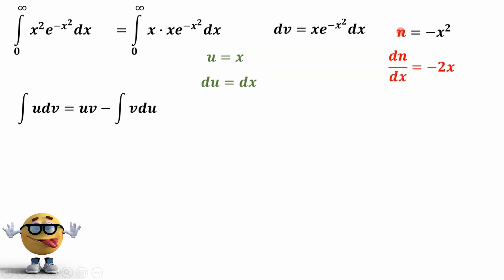So now we're going to rearrange this to solve for x dx. And that's the whole reason why we split this up, so that we can have an x here. And if we rearrange this equation, x times dx equals dn over negative 2. So x times dx is going to be dn over negative 2. We're just rearranging this equation, and negative x squared is equal to n, so we're substituting into here.